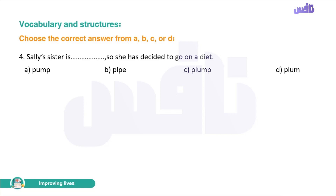Number four. Salah's sister is overweight, so she has decided to go on a diet. The correct word to describe her is 'plump' — plump means full-bodied or chubby. Not 'pump' which has no relevant meaning here. The answer is 'plump' — ممتلئ الجسم.